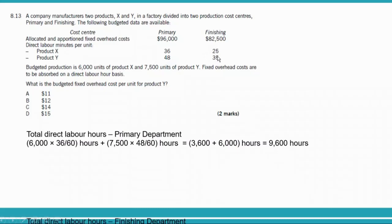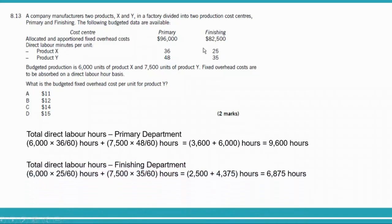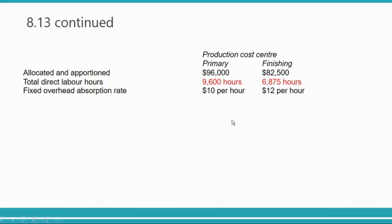For the finishing department: 6,000 units of X multiplied by 25 divided by 60, plus 7,500 units of Y multiplied by 35 divided by 60, gives 6,875 hours. Now we calculate OARs: for primary, $96,000 divided by 9,600 hours equals $10 per hour. For finishing, $82,500 divided by 6,875 hours equals $12 per hour.